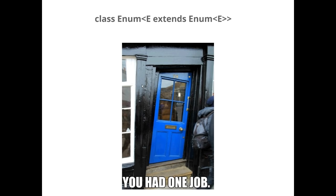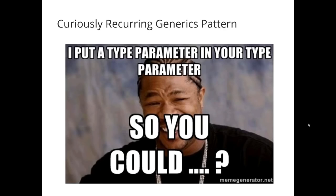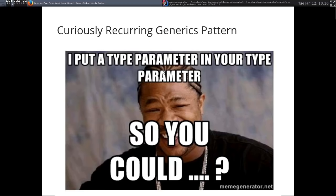Next is what we call the curiously recurring generics pattern — you might have seen Enum<E extends Enum<E>>. There's actually a meme on the internet inspired by it. Let's look at some code examples to understand what we're actually trying to do.